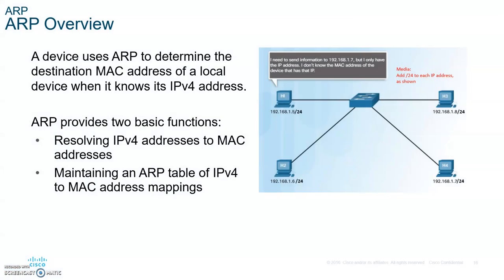Let's talk about ARP now. Let's say host 1 wants to communicate with host 4. He has the IP address already. PC1 is going to get the source IP address, put it on his packet, and take the destination IP address and put it on that packet, then encapsulate it into a frame, and host 1 will put his MAC address on the frame. But now he needs the MAC address of host 4. He doesn't know where host 4 is located in the switch, so he sends out an ARP request — a broadcast message — to all the hosts in the LAN.